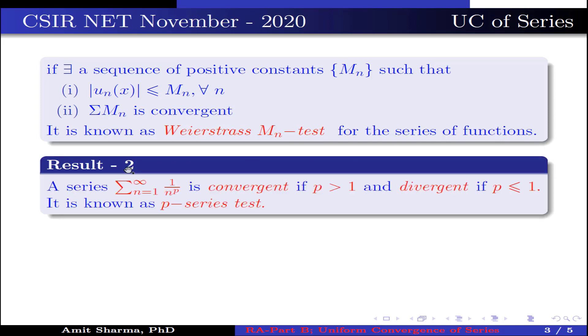Result number 2: A series summation n varies from 1 to infinity, 1 over n to the power p, is convergent if p is greater than 1 and divergent if p is less than or equal to 1. It is known as p-series test.